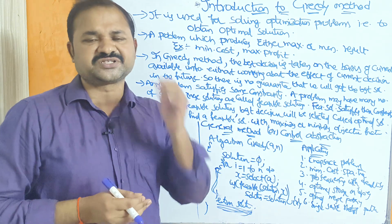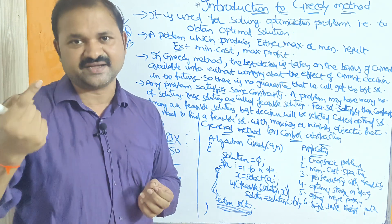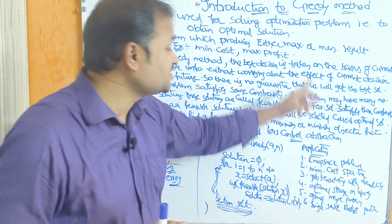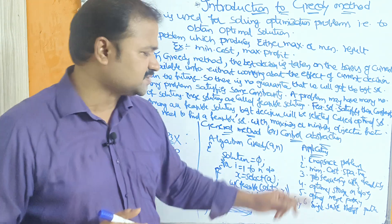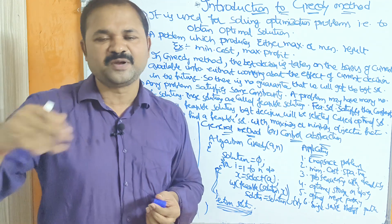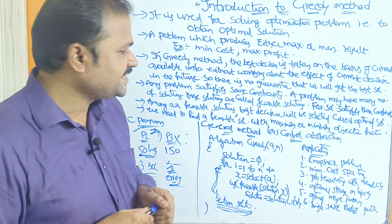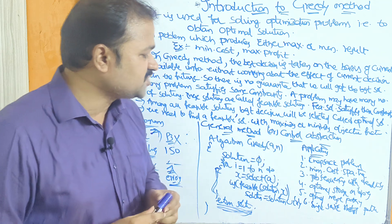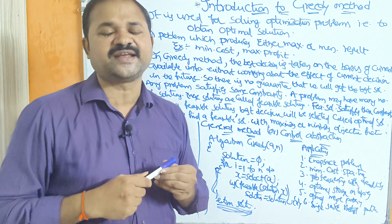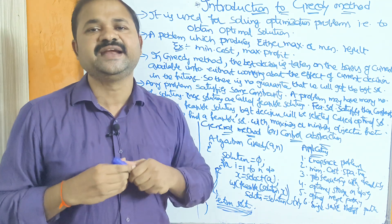Now let us see the applications of the greedy method. There are six applications: first, the knapsack problem; second, minimum cost spanning tree, which uses Prim's algorithm and Kruskal's algorithm; third, job sequencing with deadlines; fourth, optimal storage on tapes; fifth, optimal merge pattern; and sixth, the single-source shortest path algorithm, which is Dijkstra's algorithm. This concludes the introduction to the greedy method.